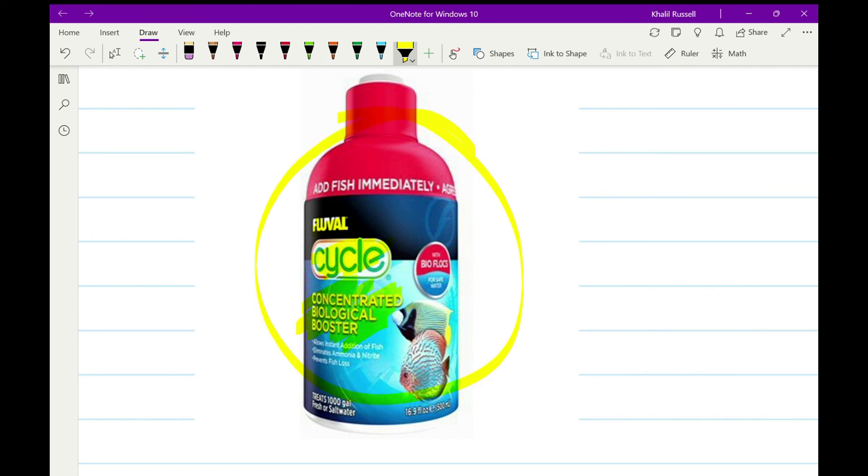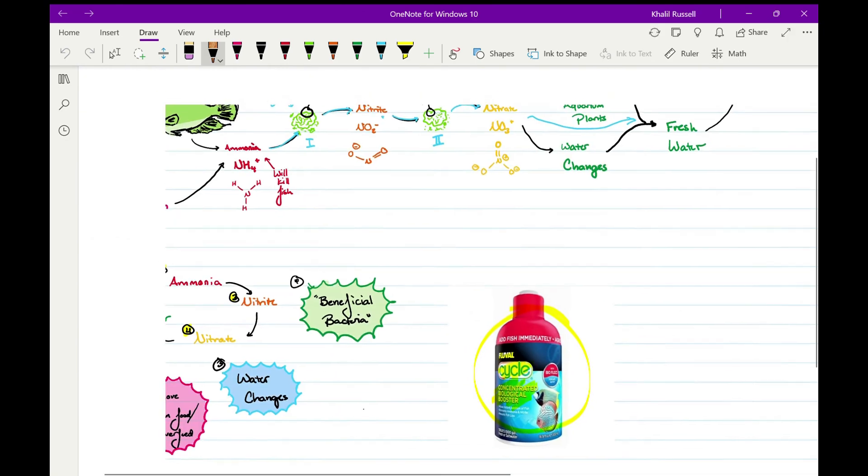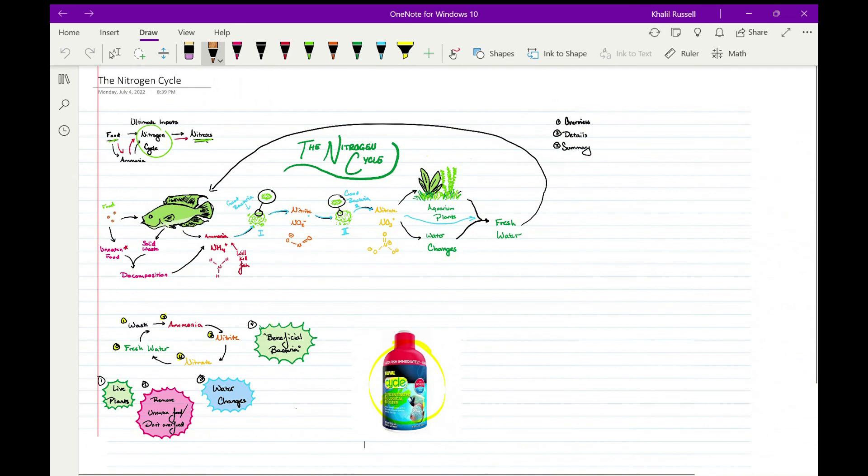Today, you can buy this Fluval Cycle concentrated biological booster, which is what I use and what I now swear by. And you can add fish instantly. Super helpful. Huge change for the hobby. Really happy about it. So anyway, that's 10 minutes of the nitrogen cycle.